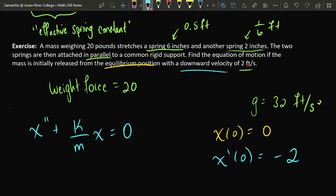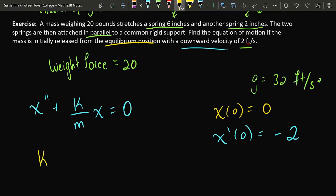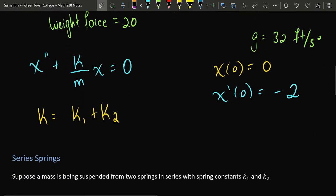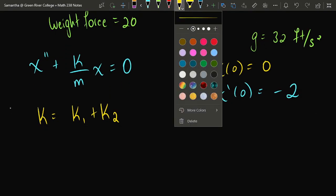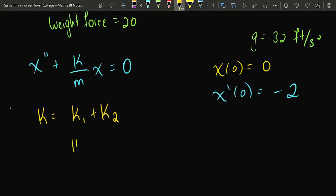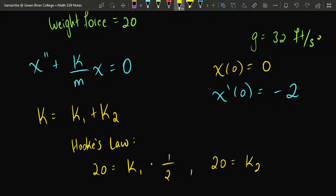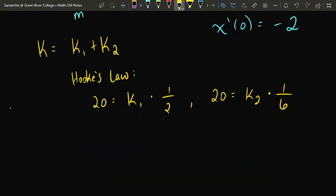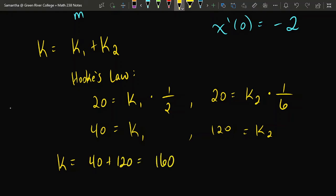Since the mass is suspended from two springs in parallel, the effective spring constant equals the sum of the individual spring constants. The weight force of 20 stretched spring one by one-half foot, giving k1 = 40, and stretched spring two by one-sixth foot, giving k2 = 120. The effective spring constant for the parallel system is therefore 40 + 120 = 160.